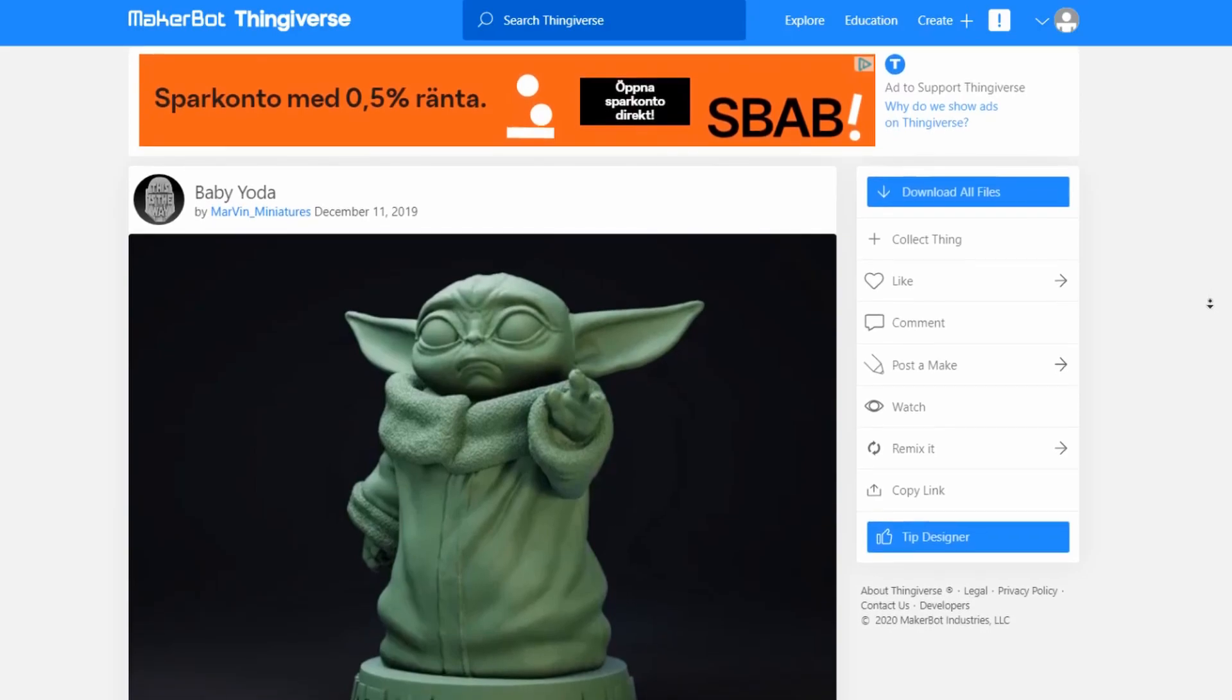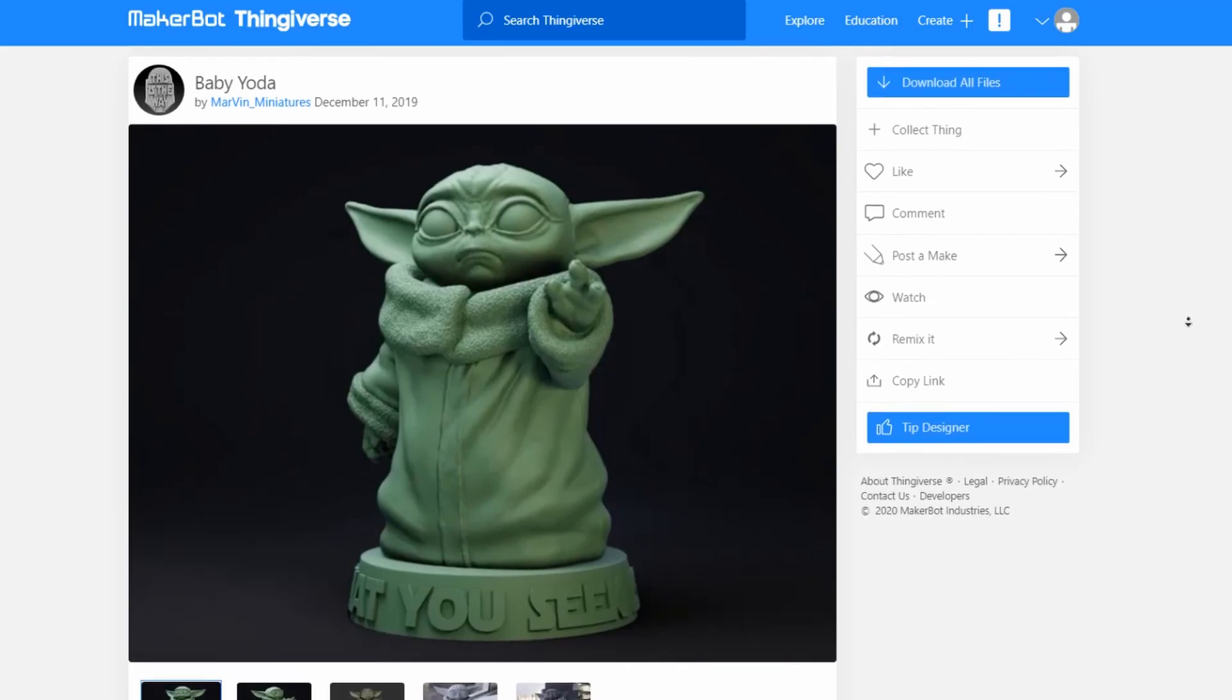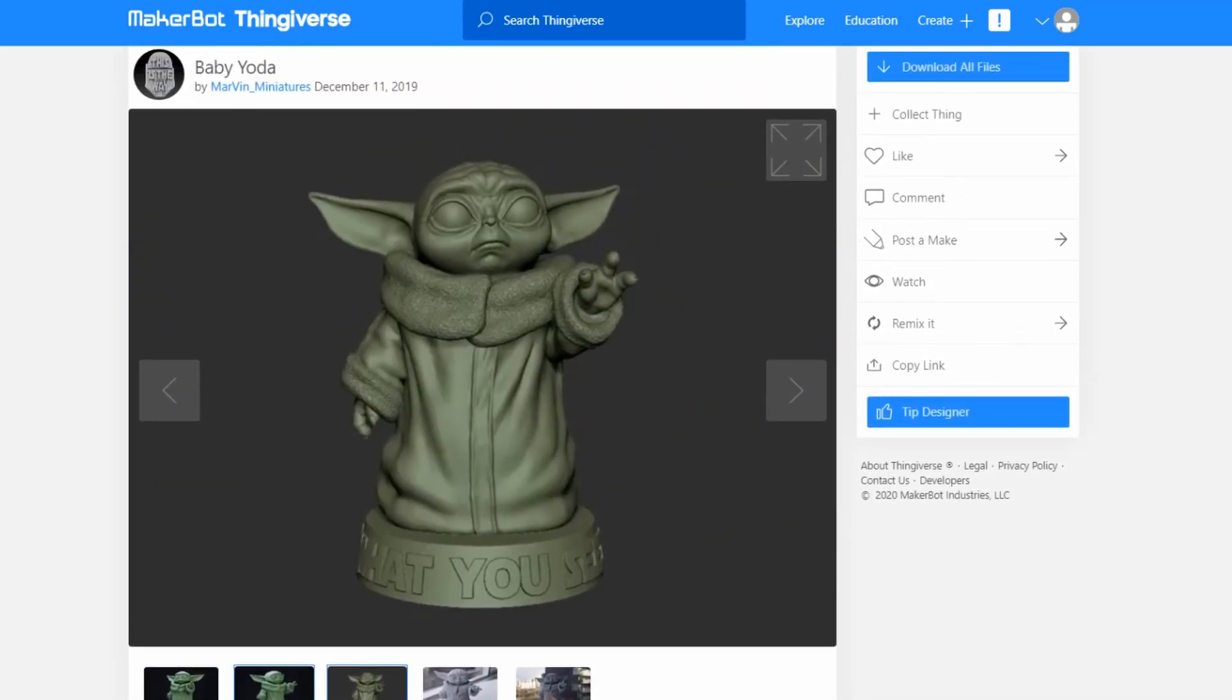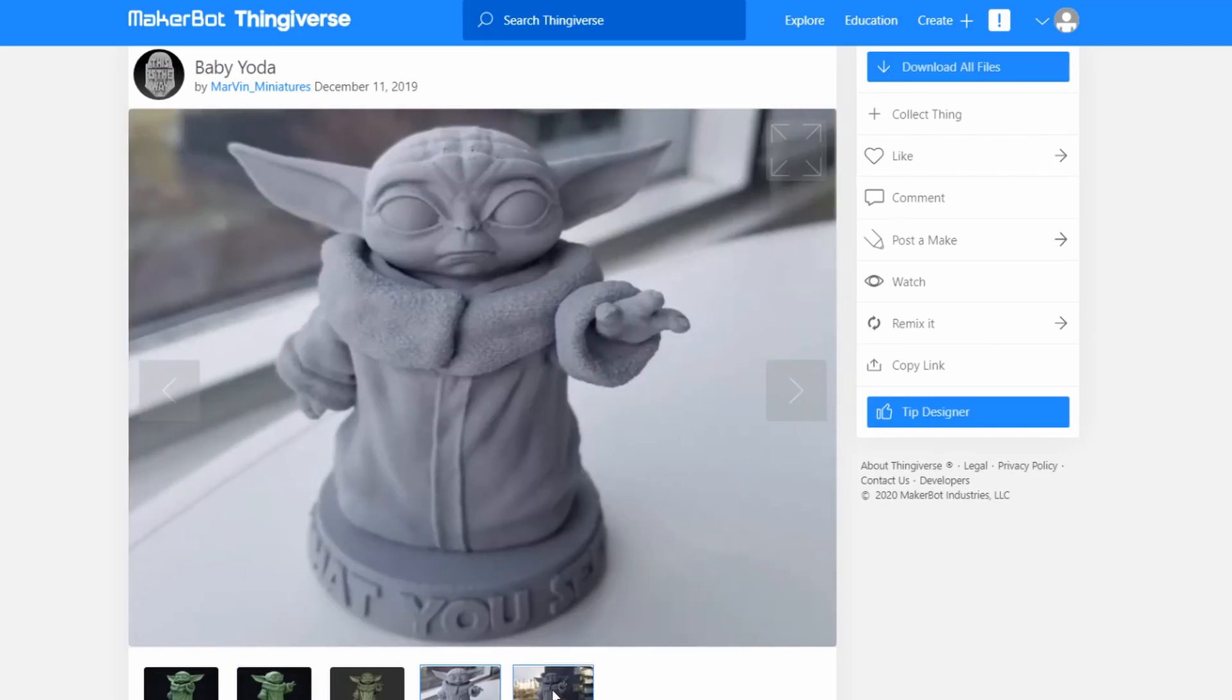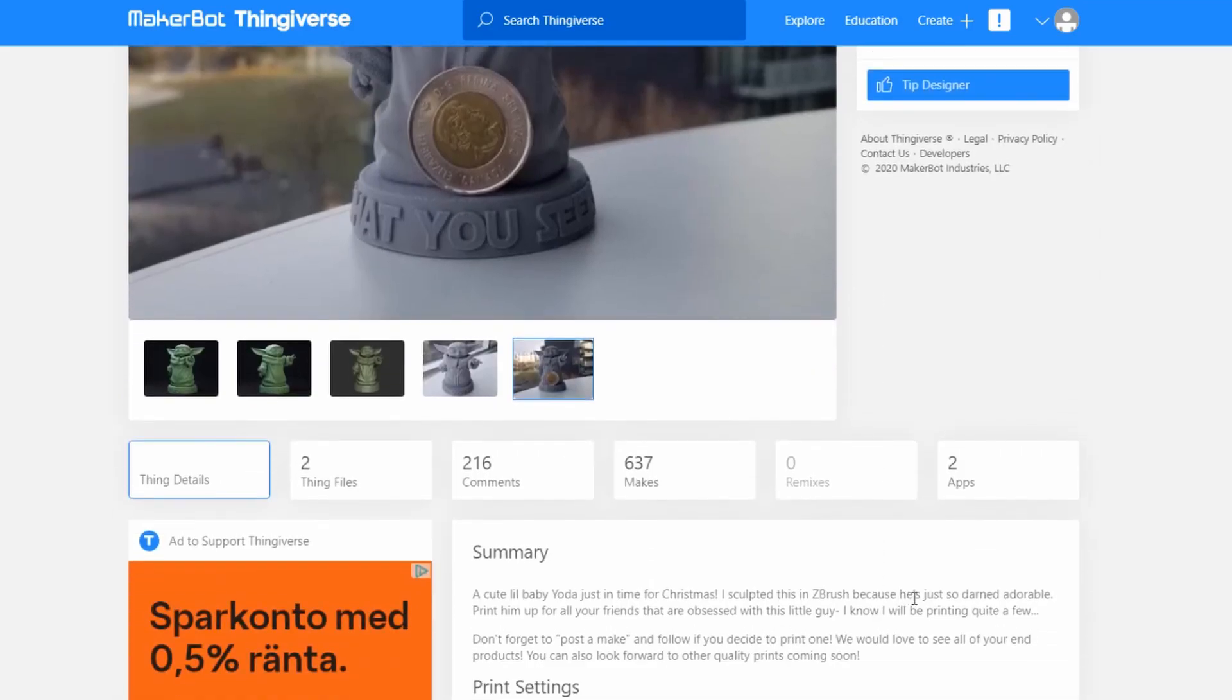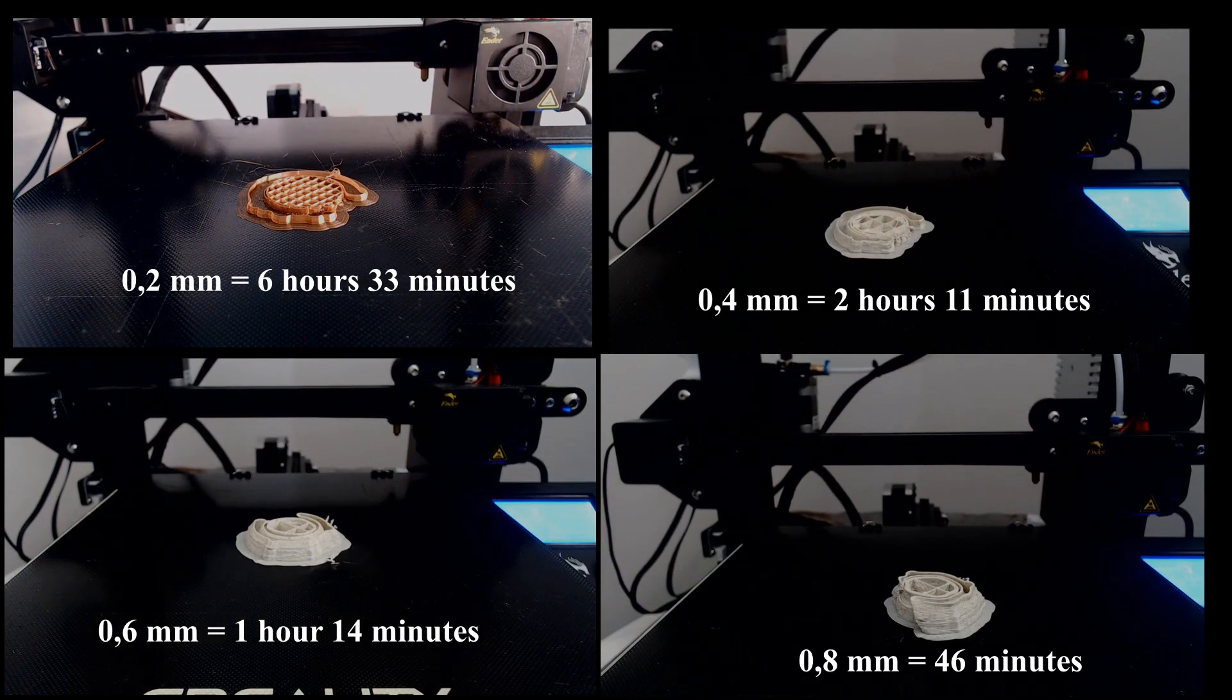Let's find out how the nozzle affects our prints in real life. I downloaded this popular Baby Yoda file from Thingiverse. We will print it at 50% size to get even more fine details and keep the printing time to a reasonable amount. I am going to print with a layer height of half the nozzle diameters.